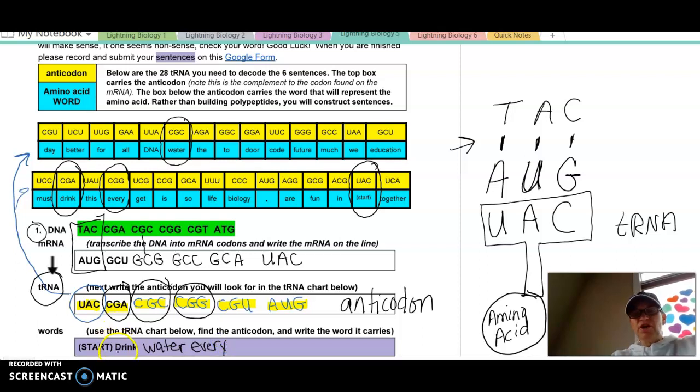So my sentence is starting to take form. It says drink water every. What do you think this next word might be? You can start to actually predict. And so I'm going to look for, in yellow, I'm going to look for CGU. So I come up here. I look for CGU. It's the first one right here. Drink water every day. So I'll go ahead and write the word day. And you know that this is working because that's a sentence that actually makes sense. Drink water every day.